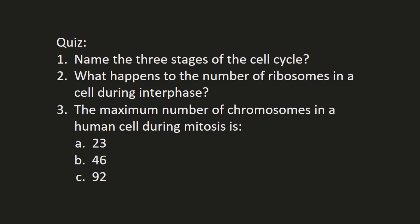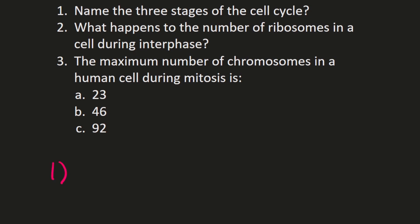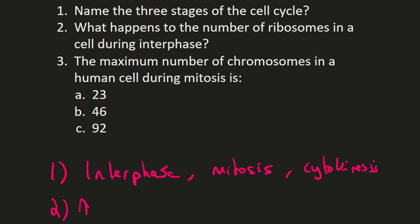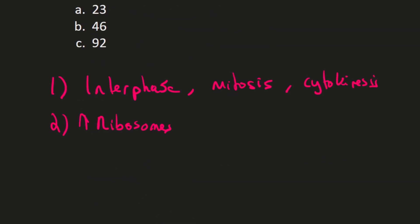Quick quiz — feel free to pause and have a go. Question one: name three stages of the cell cycle. The three stages are interphase, mitosis (the stage of cell splitting or reproduction), and cytokinesis (where the cell fully splits into two). Question two: what happens to the number of ribosomes in a cell during interphase? The cell structures basically increase — the number of ribosomes increases, as the cell increases the number of all its subcellular structures.